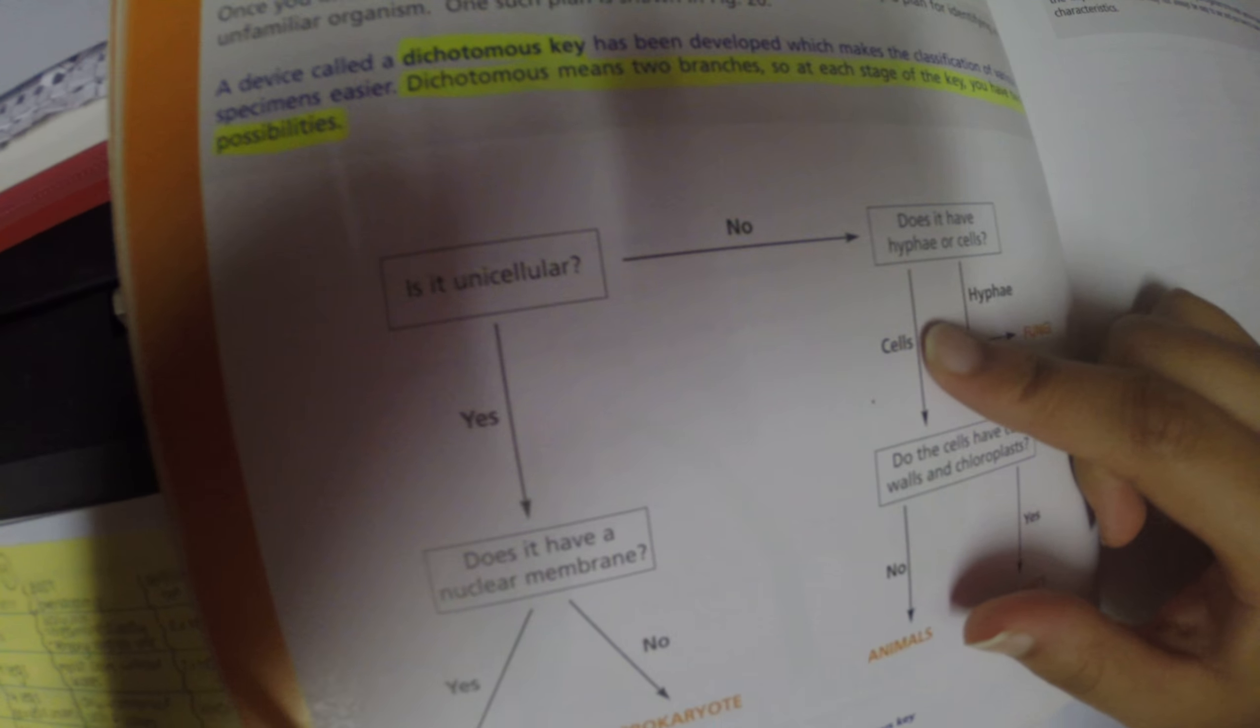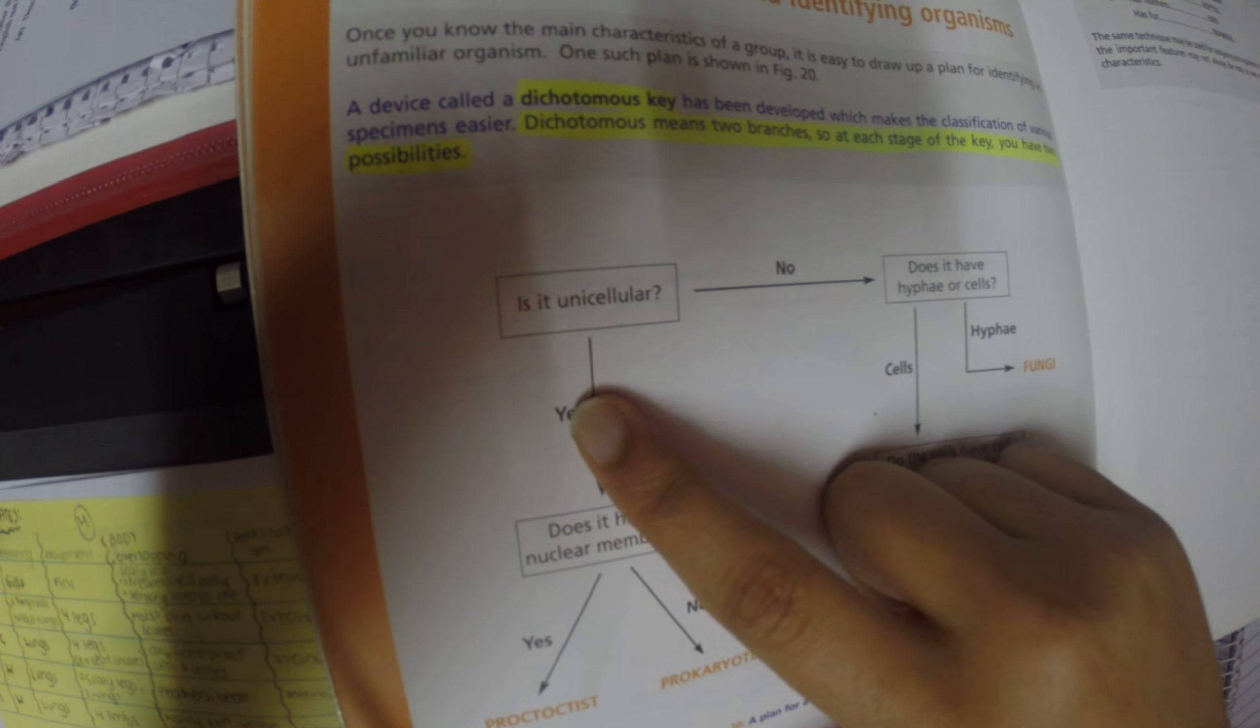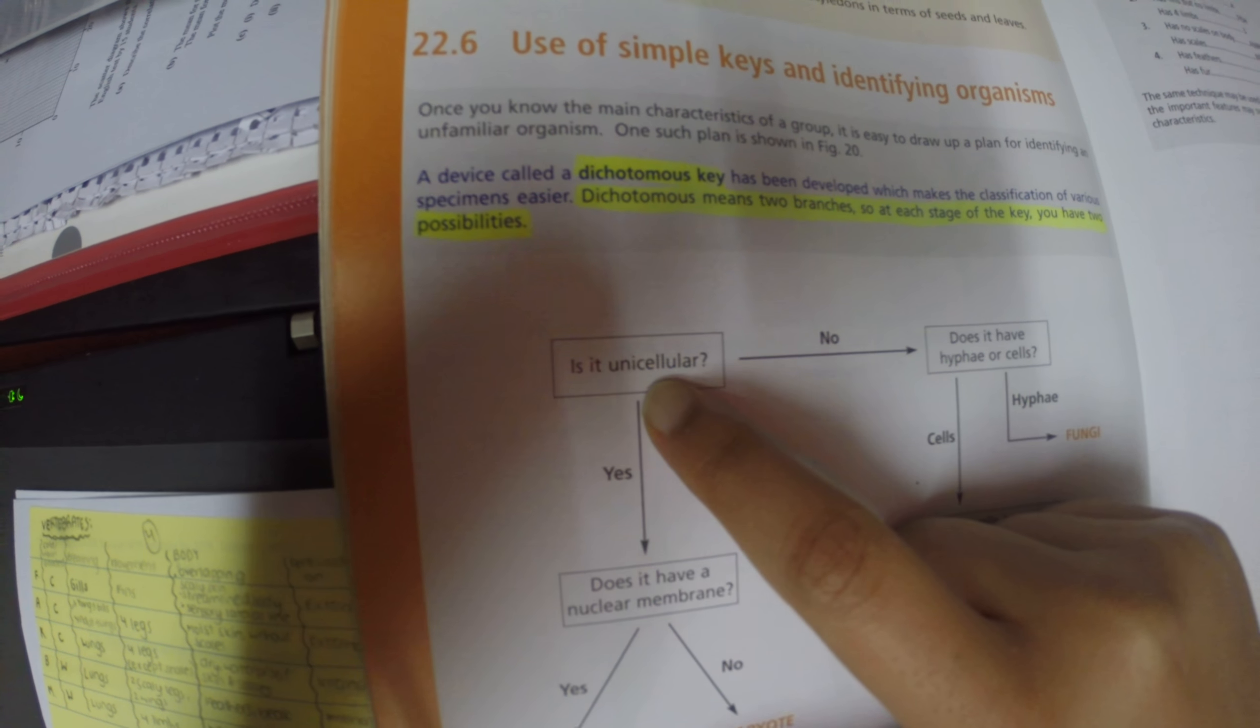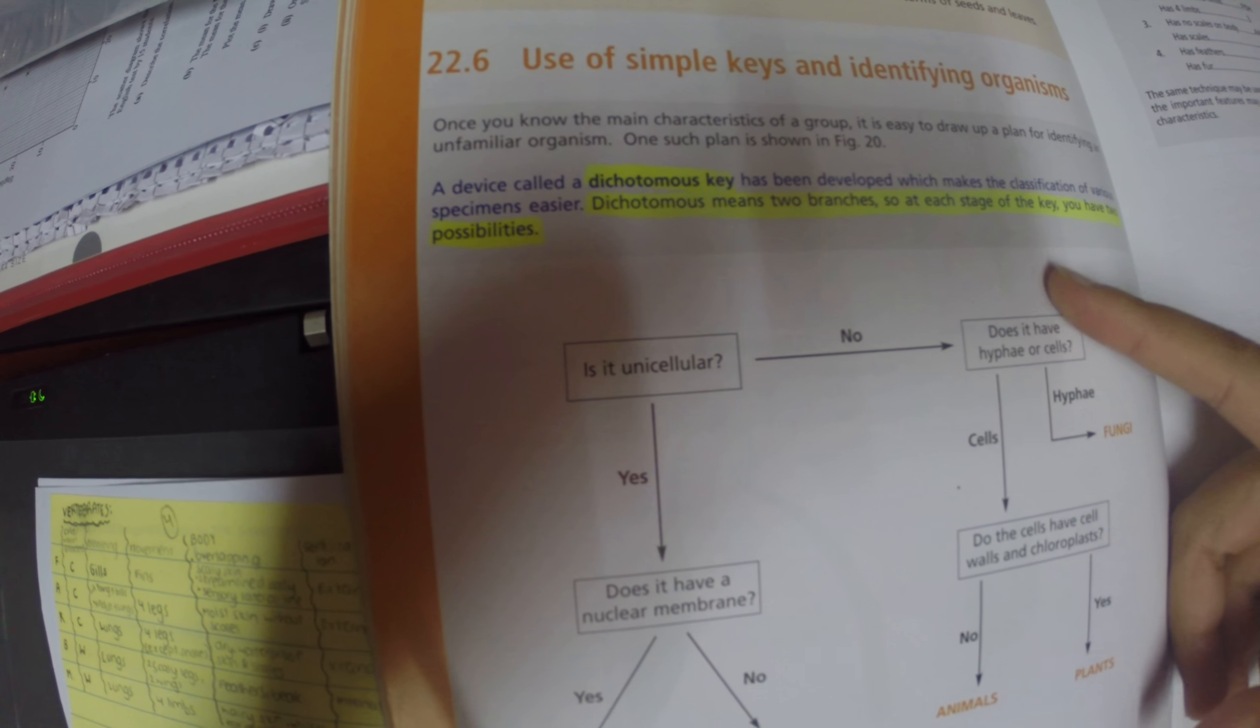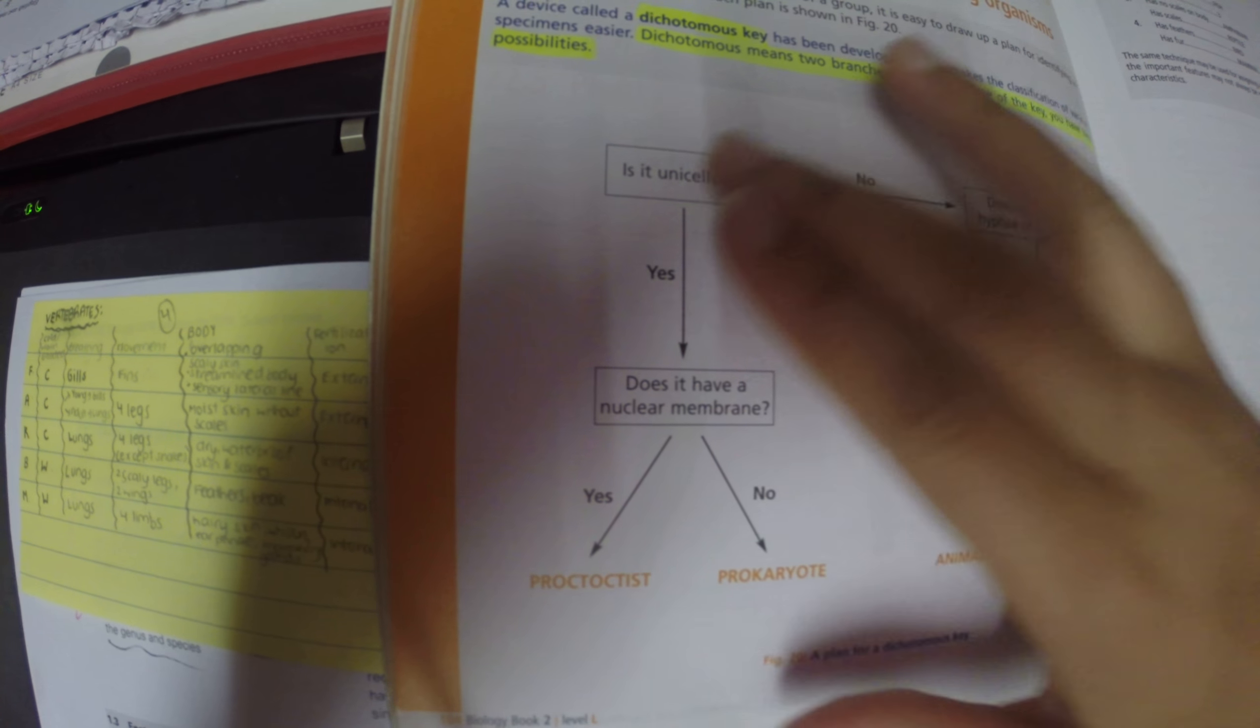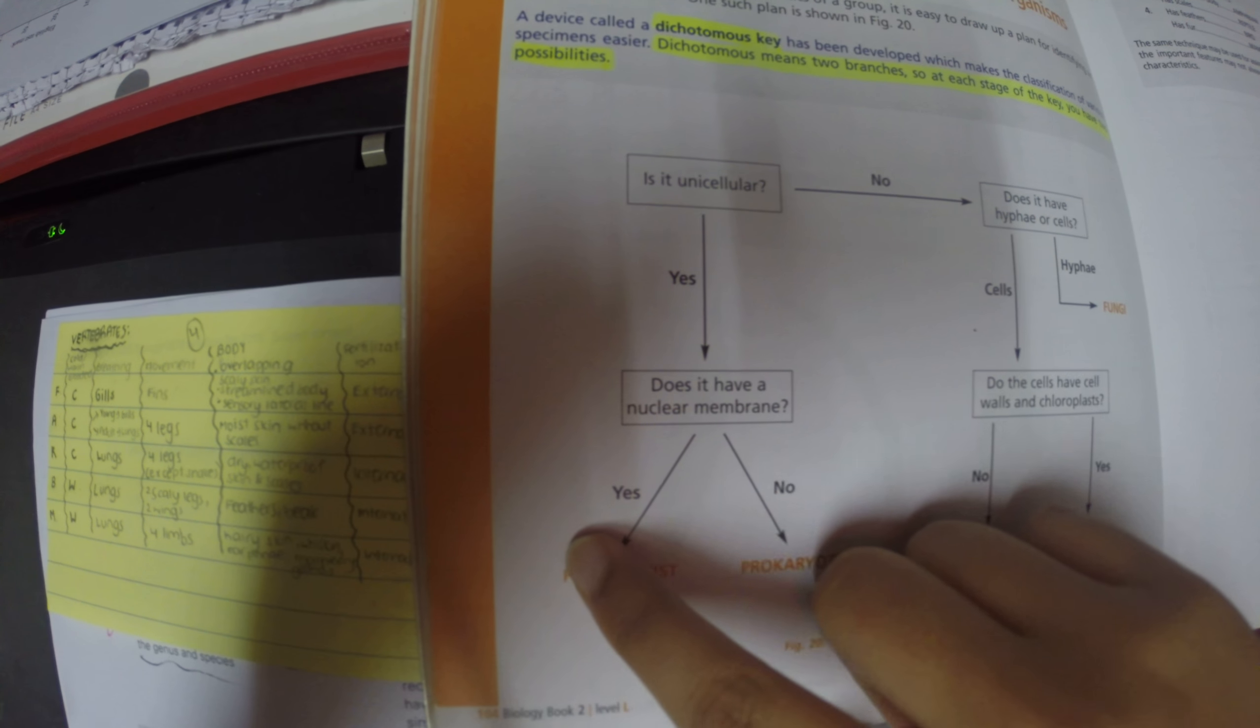Over here, the option is like, is it unicellular? If the question is is it unicellular, yes, if it is unicellular, then there are two other options such as Protoctista and prokaryotes. If it's not unicellular, then you ask another question. So it's just basically asking options and options. Does it have a nuclear membrane? If yes, it's this; if no, it's not.